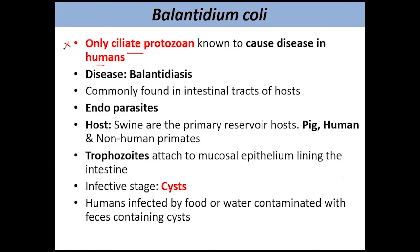Balantidium coli is a very special type of ciliate because it is the only ciliate that can infect humans and cause the disease known as balantidiasis. They are commonly found in the intestinal tract of the host, making them endoparasites.